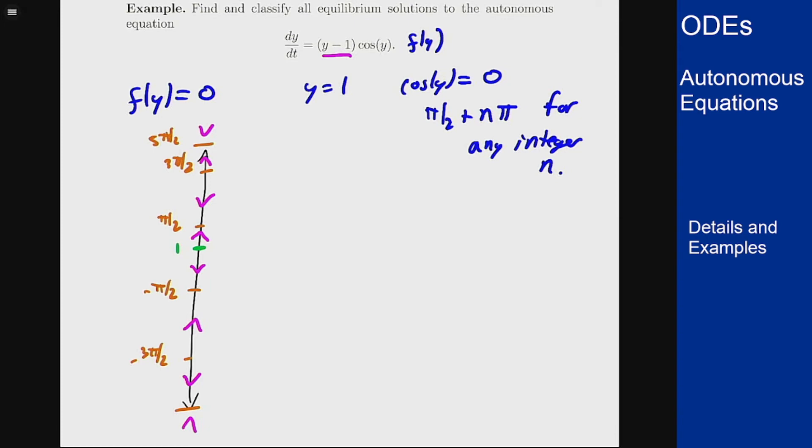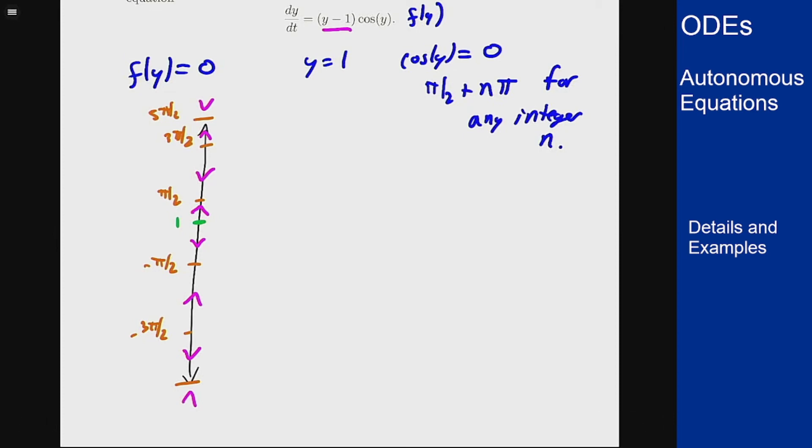So what do we see for these solutions? Well we see that y equals 1 is unstable. We get that just by looking at the picture right here, both arrows are going away from y equals 1.